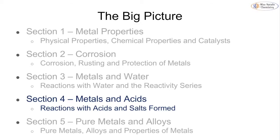This is section 4 of topic 8G, metals and their uses. We've covered metal properties, corrosion which is the reaction of metals and oxygen, and the reaction of metals and water. Now we're going to look at how metals react with acids and what salts can be formed.